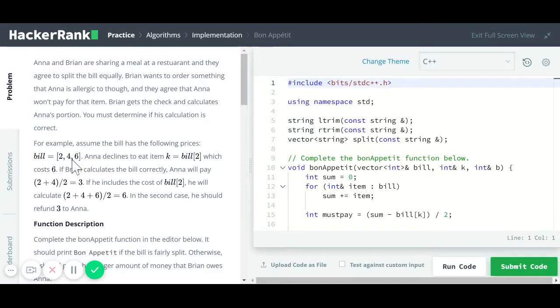Let's say we have an array like this here, the bill is 2, 4, 6, but Anna did not eat the item at index 2, which is the item with a price of 6. In this case, Anna's part is going to be 2 plus 4, which is 6, divided by 2. So Anna will only need to pay 3 and not 6.